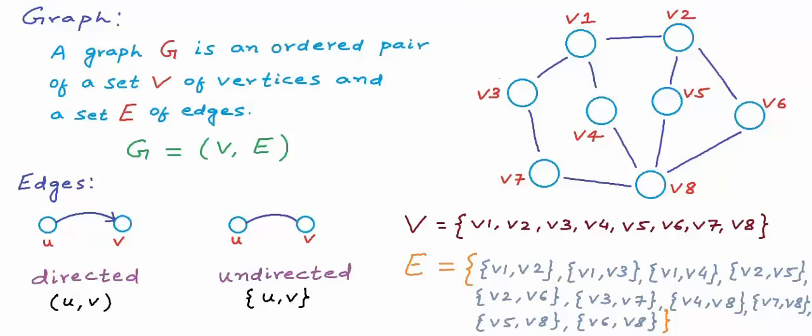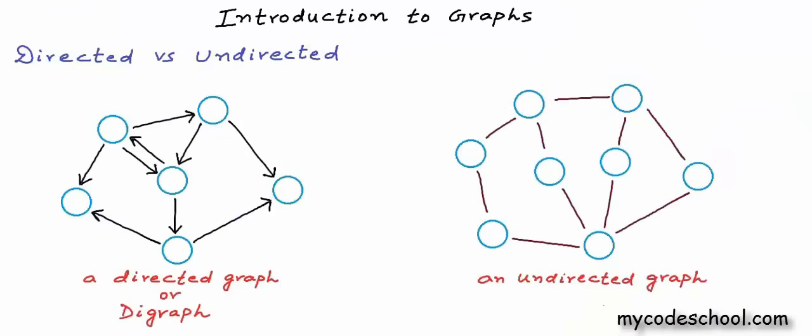Typically in a graph, all edges would either be directed or undirected. It's possible for a graph to have both directed and undirected edges, but we are only going to study graphs in which all edges are either directed or undirected. A graph with all directed edges is called a directed graph or digraph. A graph with all undirected edges is called an undirected graph. So these are the two types: directed graph or digraph, in which edges are unidirectional or ordered pairs, and undirected graph, in which edges are bidirectional or unordered pairs.